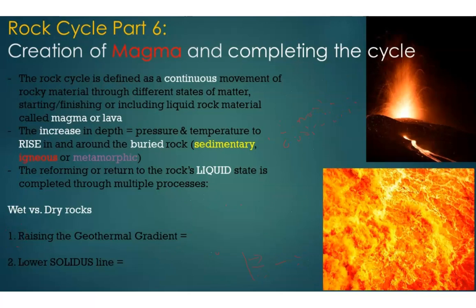The next thing is to lower that solidus line. So we have our little graph again, here's our temperature, here's our pressure and depth, and here is our geothermal gradient right there. Here is our solidus line, and here's our liquidus line, and it's partial gradient in between. So the next thing we can do besides raising the geothermal gradient is to lower this solidus line and bring that more towards the geothermal gradient, whereby that's the average temperature, heat, and pressure based on depth, and you're going to increase the chance of melting that rock and creating magma.